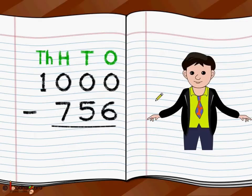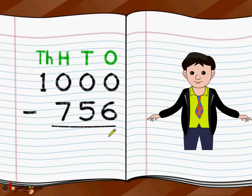We write 1000 like this, ensuring we write at the correct place values: 1 at the thousands place and all zeros. Minus 756 — no thousands here, so we leave it empty. 7 goes below the hundreds place, 5 at the tens, and 6 at the ones. We start from ones position and subtract two digits, then move to the tens position, and so on.